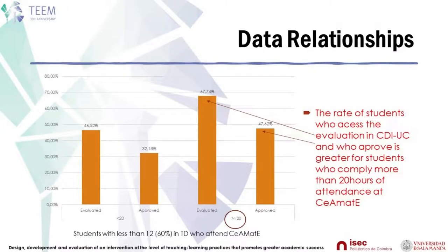Observations conclude that the rate of students who scored below 60 percent in the diagnostic test and were approved in differential and integral calculus is higher for students who comply with the recommended guidelines for better recovery of learning in mathematics, which corresponds to more than 20 hours of attendance at SEAMAT.